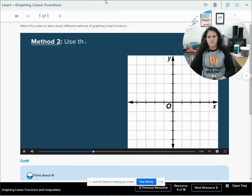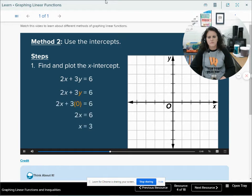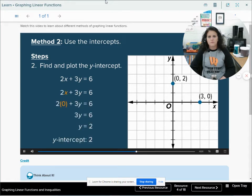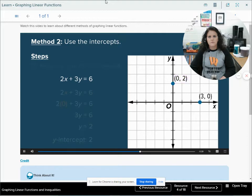You can also graph a linear function by using the intercepts. To find the x-intercept, find the value of x when y equals 0. Graph the x-intercept on the x-axis. To find the y-intercept, find the value of y when x equals 0. Find the y-intercept on the y-axis. Then draw a line through the two points.